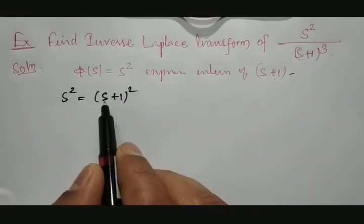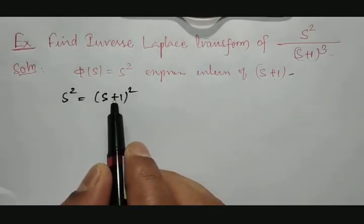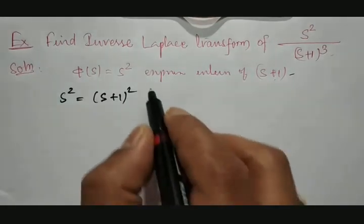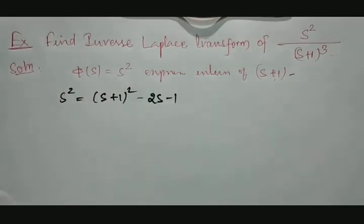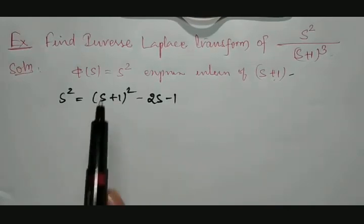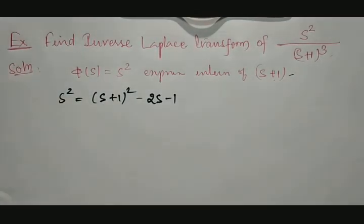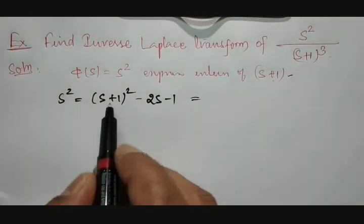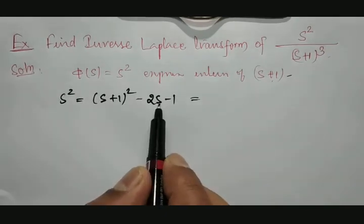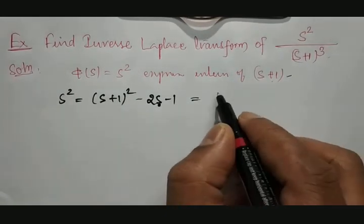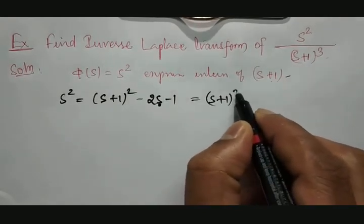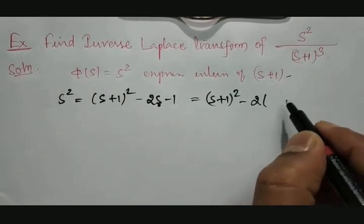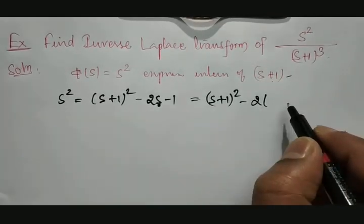Where only s² is available, the additional terms we are getting are 2s and 1. So I take minus 2s minus 1 to balance it. Now, in the minus 2s term, I need (s+1) again, so I write (s+1)² minus 2 times s — but I replace s blindly with (s+1) to keep things in terms of (s+1).